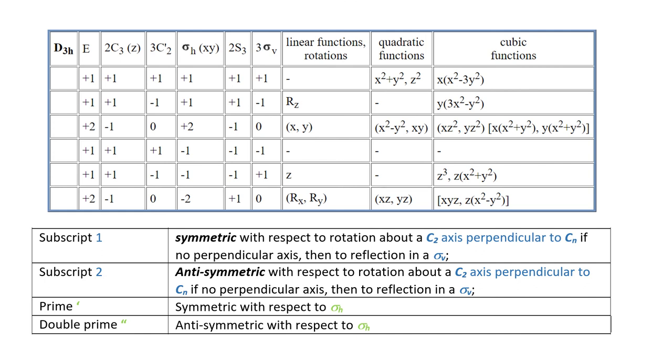Assigning E representation is easy. We can see two under E operation. Then the rest of the entries under E operation are plus 1, so they're either As or Bs. So we look under the main axis of rotation, C3, so we see that all the entries are plus 1, so they're all As.